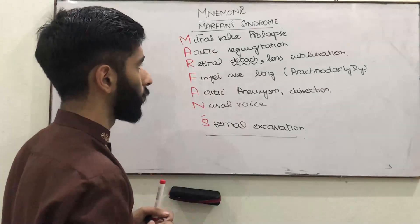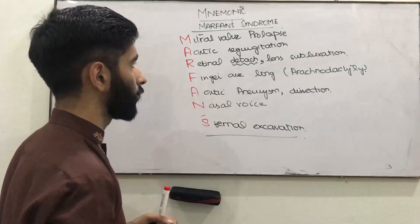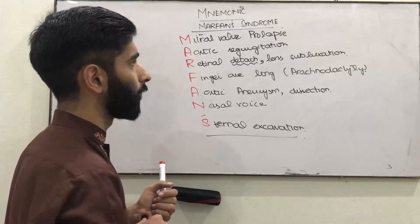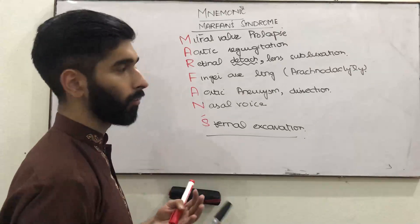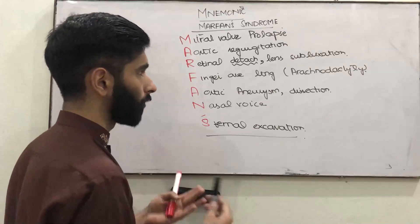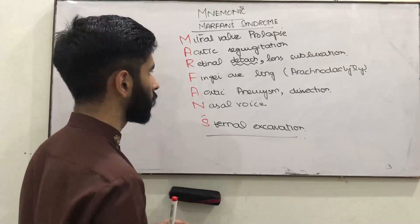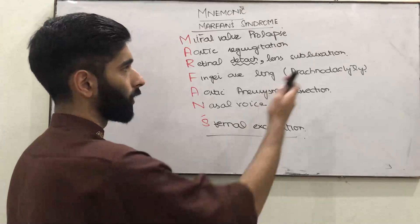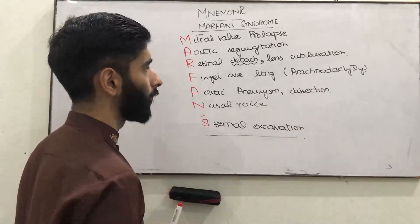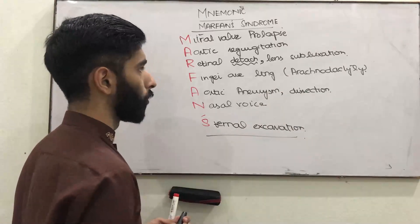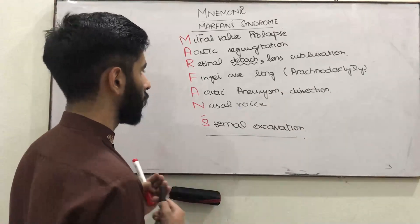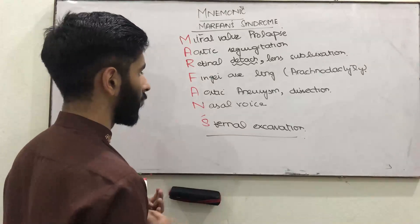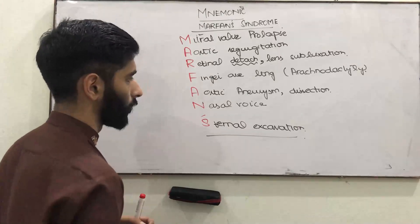So to summarize the MARFAN mnemonic: M is mitral valve prolapse, A is aortic regurgitation, R is retinal detachment and bilateral lens subluxation, F is fingers that are long which is arachnodactyly, A is aortic aneurysm and dissection, and N is nasal voice and sternal excavation.